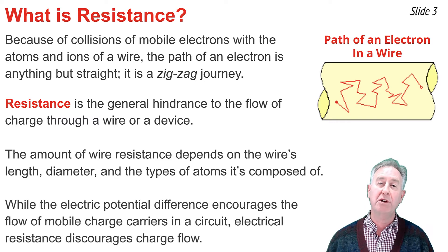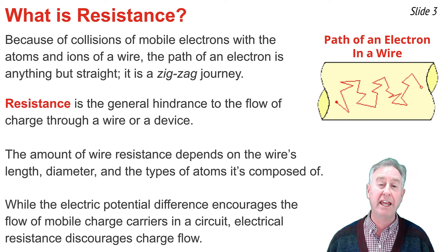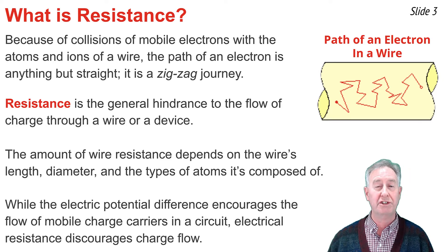We can think of electrical potential difference impressed across the two ends of the circuit as being that quantity that encourages the flow of charge. And we can think of resistance as that quantity that discourages the flow of charge.